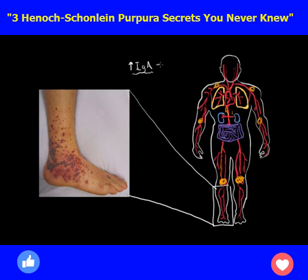These IgA immune complexes also deposit in the kidney, so you can see kidney damage and bloody urine, which is known as hematuria. These complexes also have an affinity to get stuck in the intestines, so you may see bloody diarrhea or bloody stools — known as melena, which is dark stools, or hematochezia, which is bright red blood in the stools.